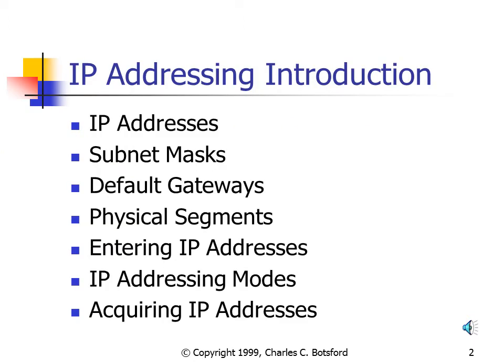In this section, we'll talk about the three key addresses: the IP Address, the Subnet Mask, and Default Gateway. We'll talk about what physical segments are, we'll talk about entering IP Addresses, we'll also talk about IP Addressing modes, and acquiring IP Addresses.